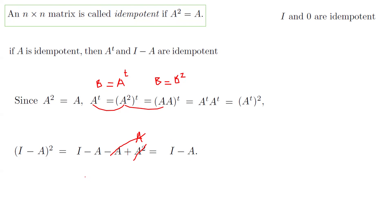So if we let C equal I minus A, we just showed that C times C equals C, which is the basic definition of an idempotent matrix. Therefore, as long as A is idempotent, we can conclude that both its transpose and I minus A are idempotent matrices.